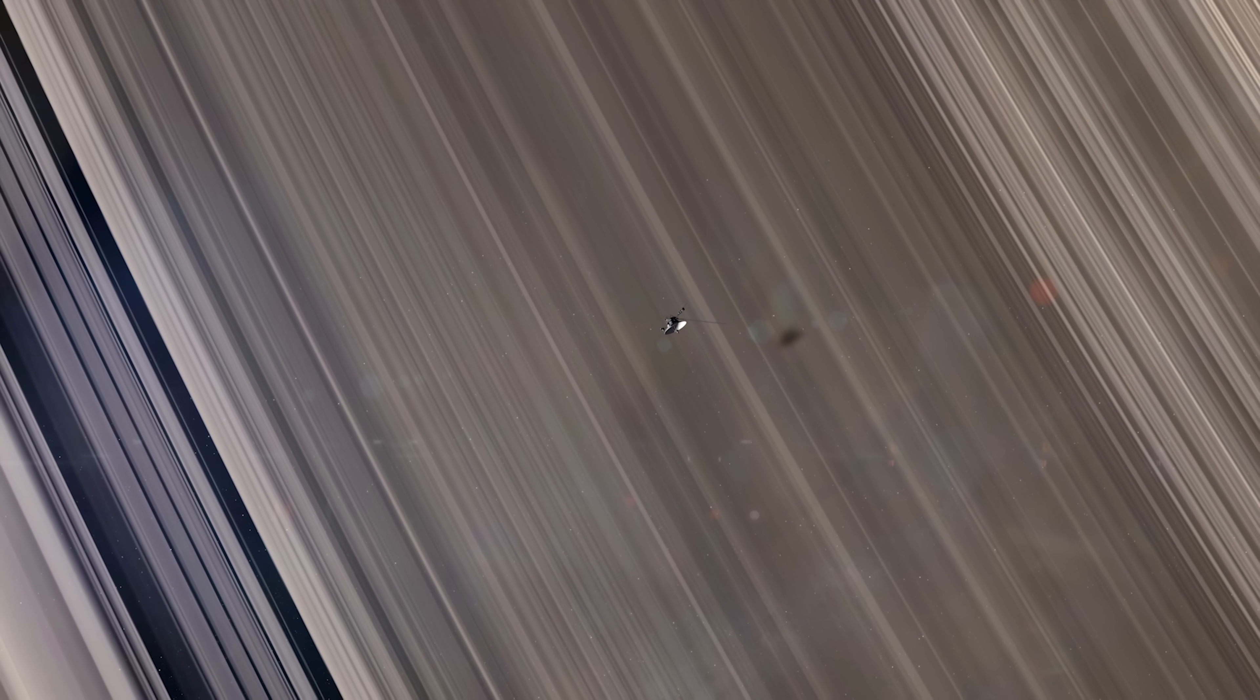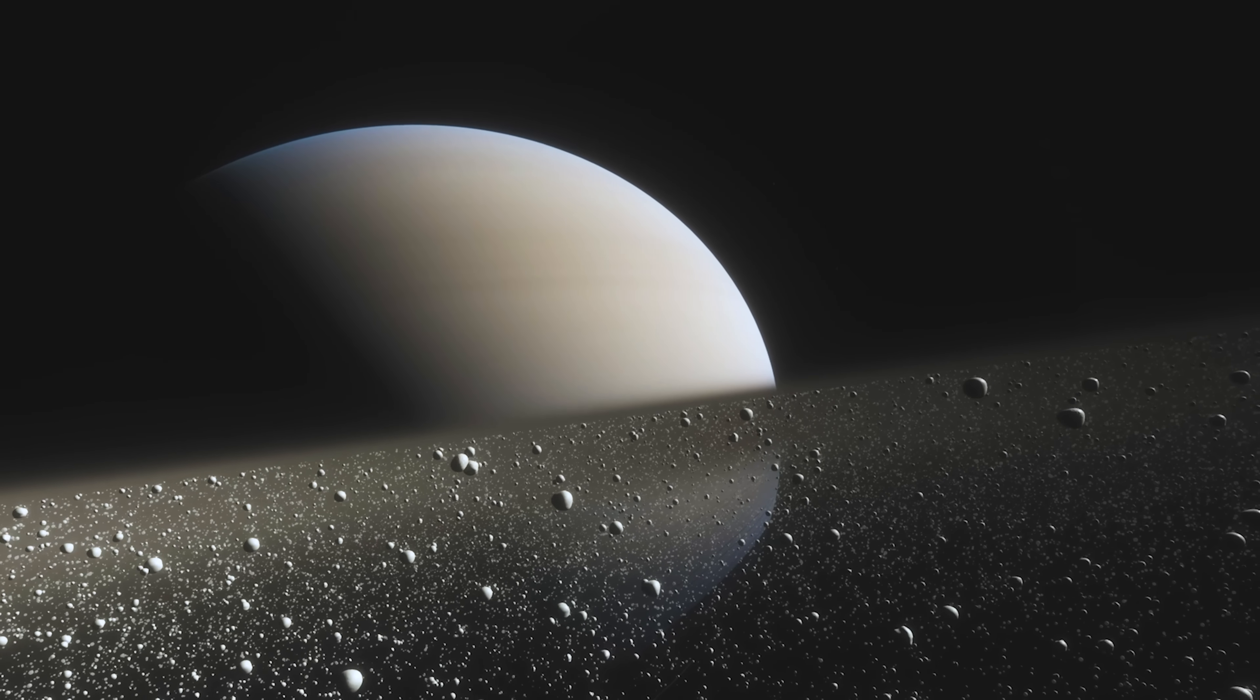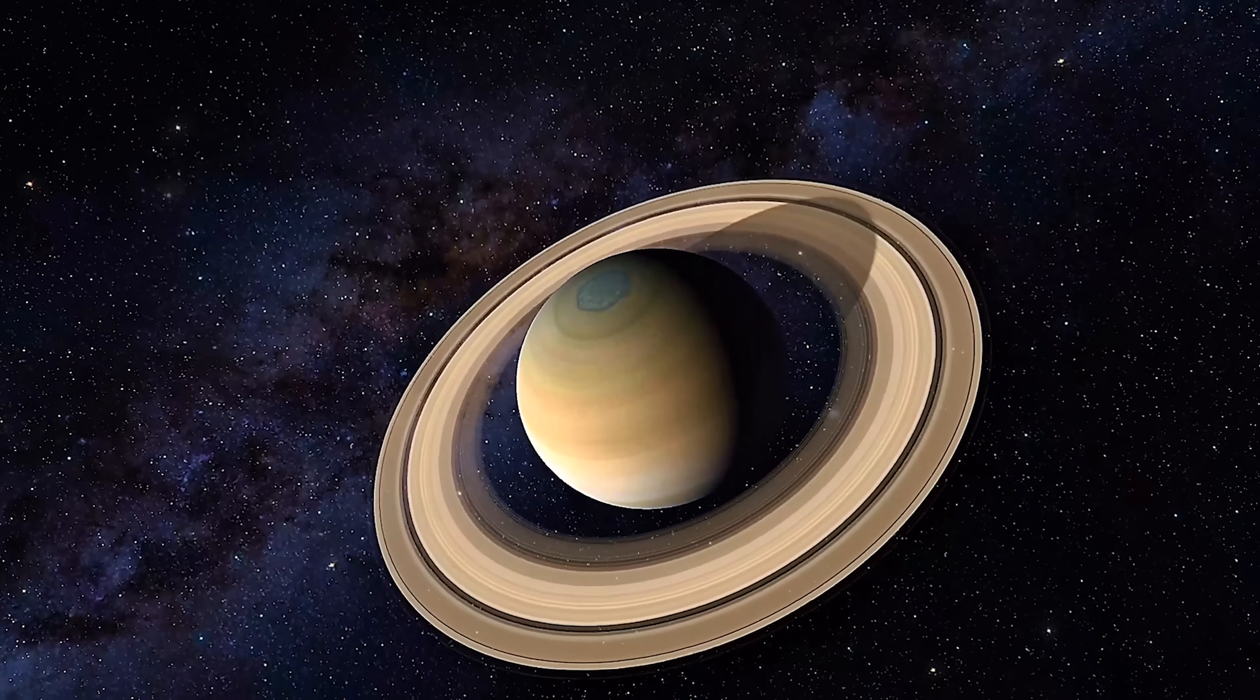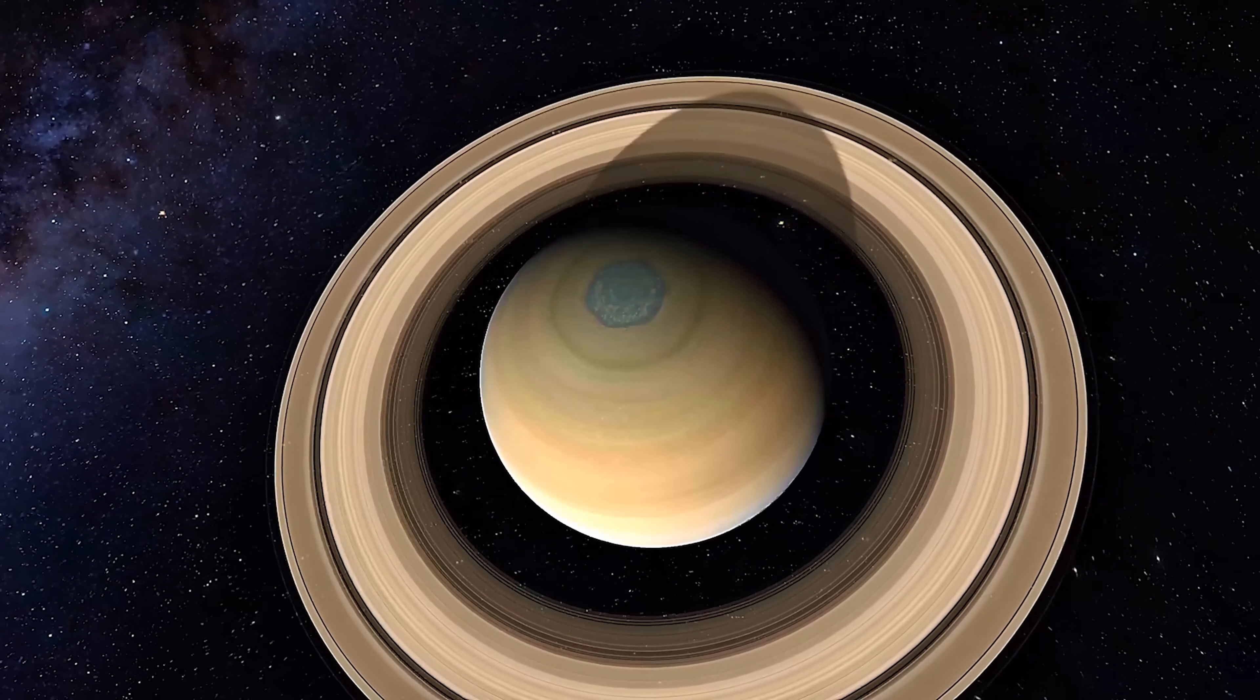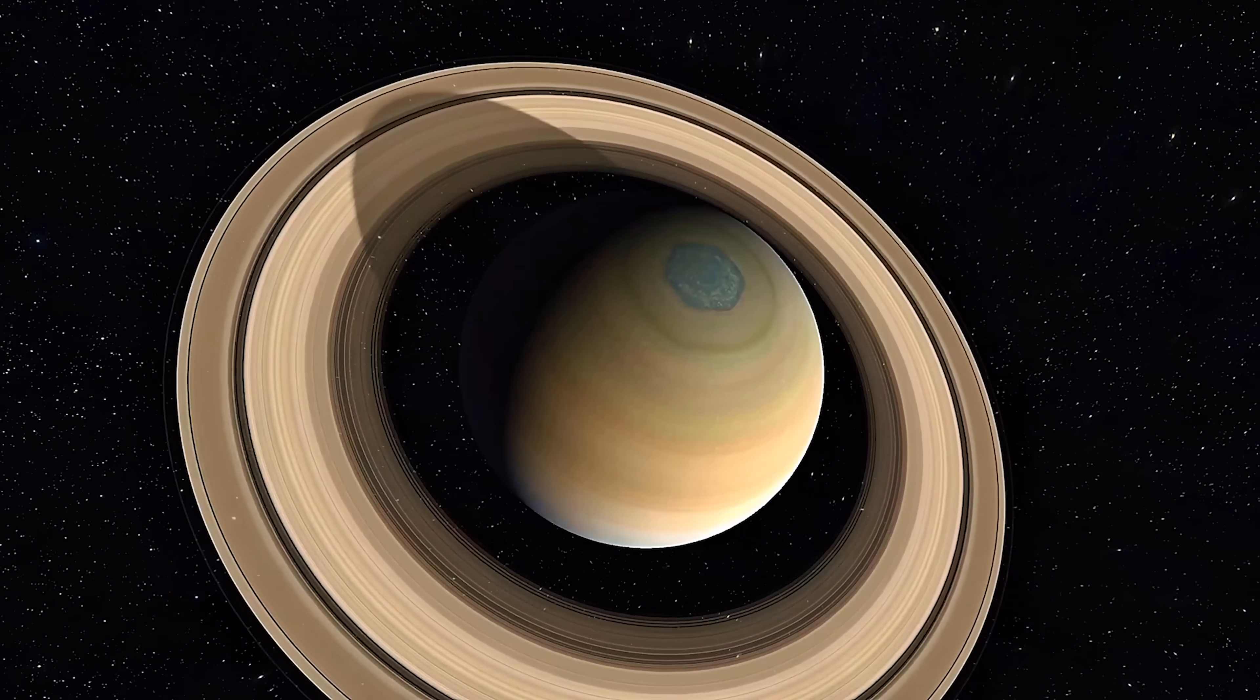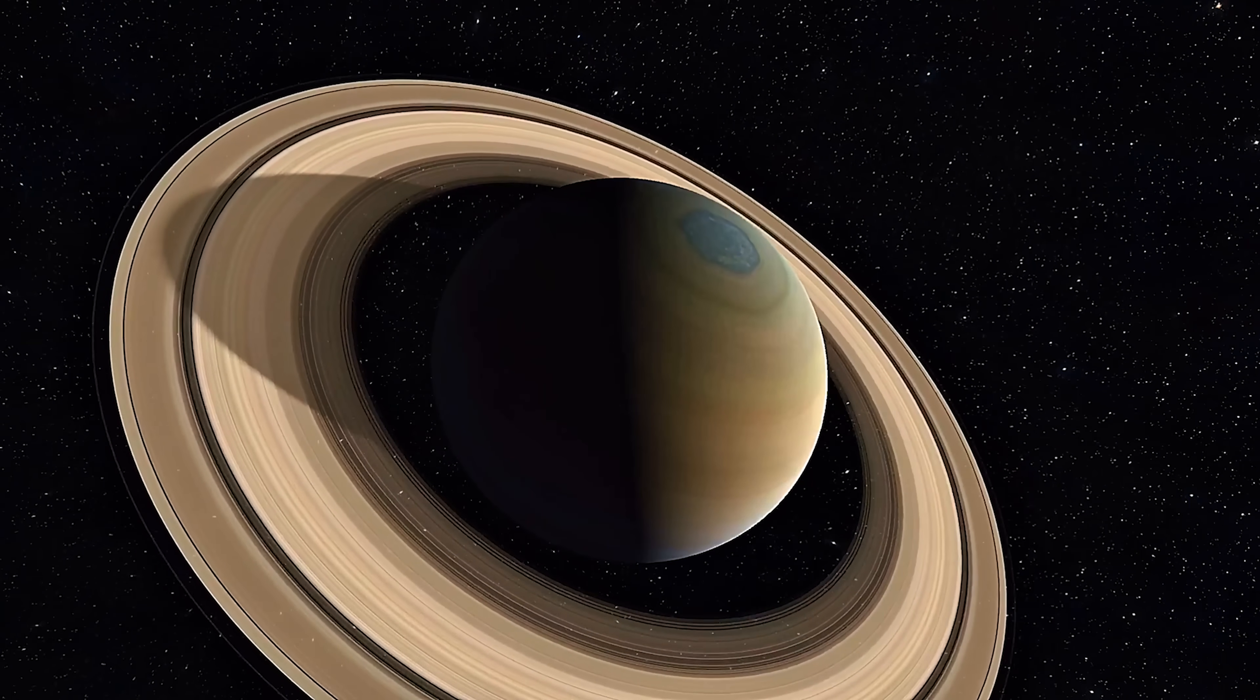But then why do the rings appear so solid and defined in photos? It's an optical effect. When you look at the rings edge on from Earth or space probes, you see billions of particles all together, like when you look at a cloud that seems compact but is made of separate water droplets. The rings have incredibly complex structures, divisions, undulations, radial spokes that appear and disappear, concentric rings with different densities. All this is caused by complex gravitational interactions with Saturn's moons, which act as shepherds, pushing and pulling ring particles into ever-changing configurations.